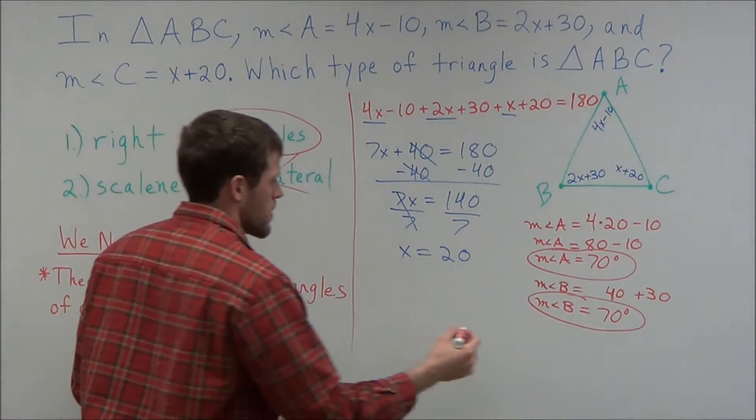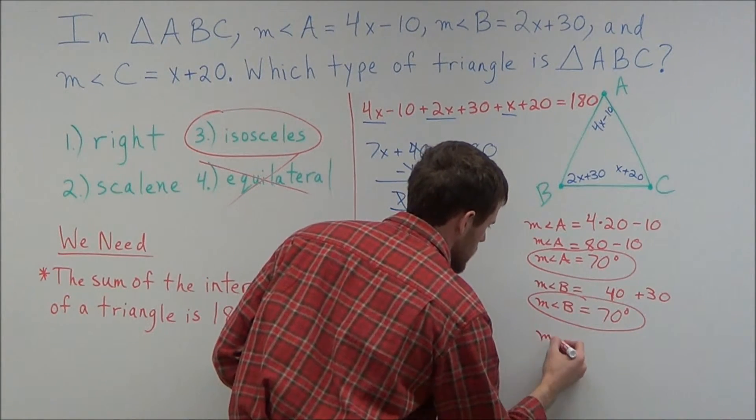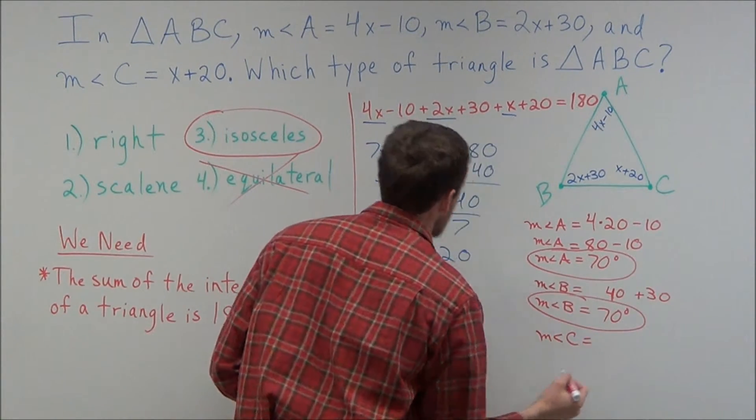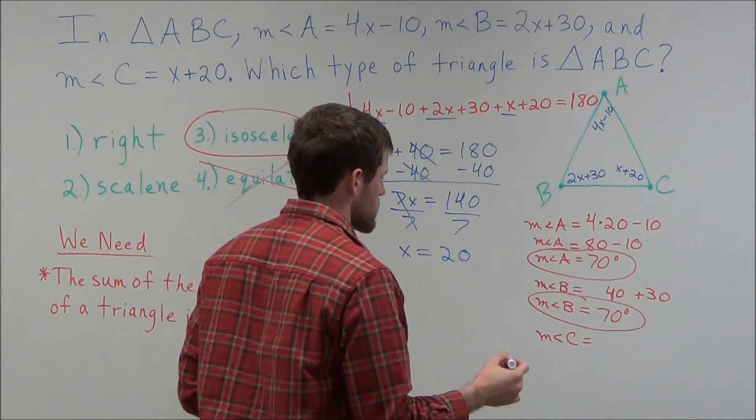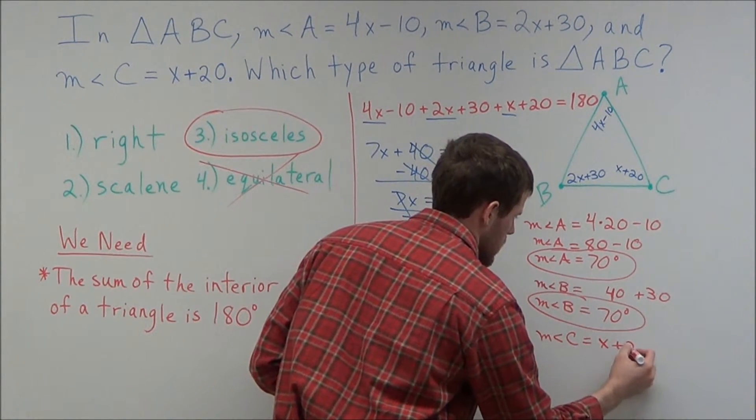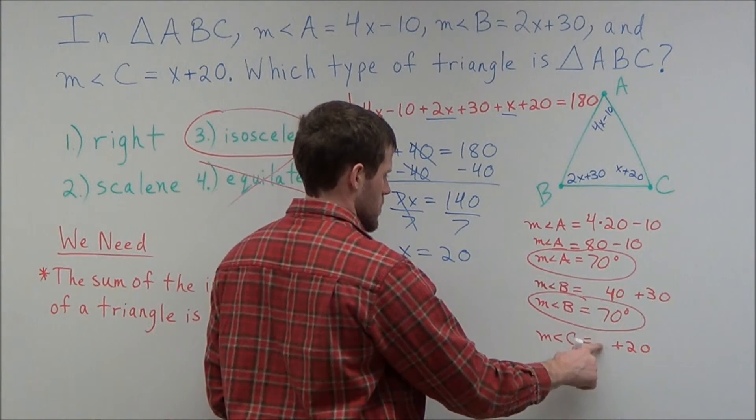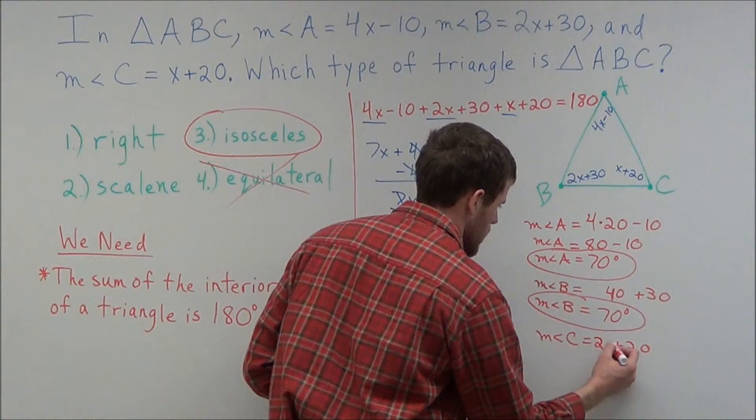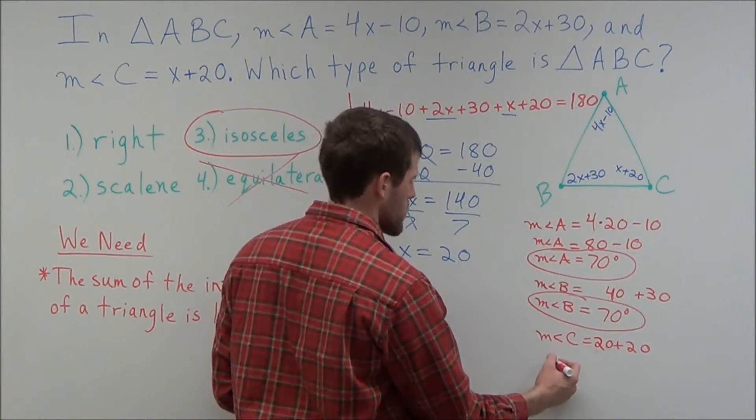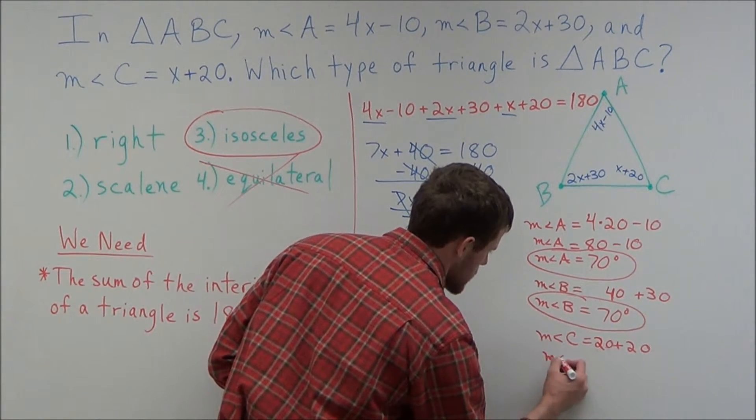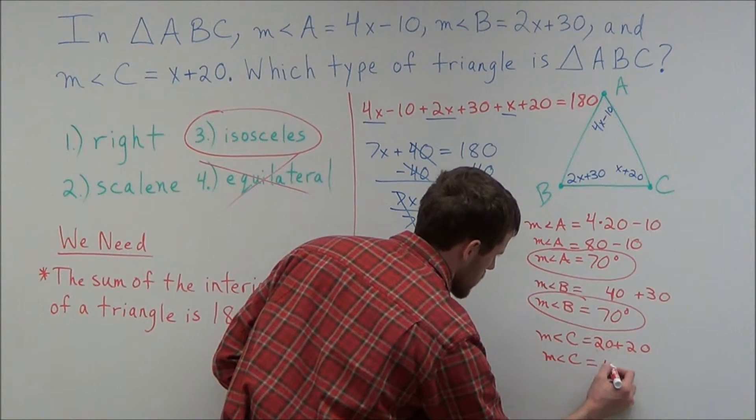But just to go the extra step, we look at the measure of angle C is equal to, and now C is x plus 20. And we found x to be 20, so we could replace x with 20. And now 20 plus 20 is 40, so the measure of angle C equals 40 degrees.